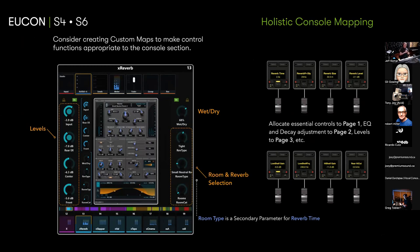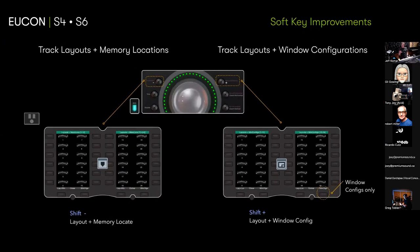Holistic mapping means using multiple sections as one to get a good experience. And alongside the assignable knob, you can quickly get to 24 composite track layout plus memory location, or track layout plus window configuration combinations. It's basically Shift plus or Shift minus on the plus and minus keys on the edges of the wheel — Shift is on the fader module. Pretty cool once you see what you can do with it.